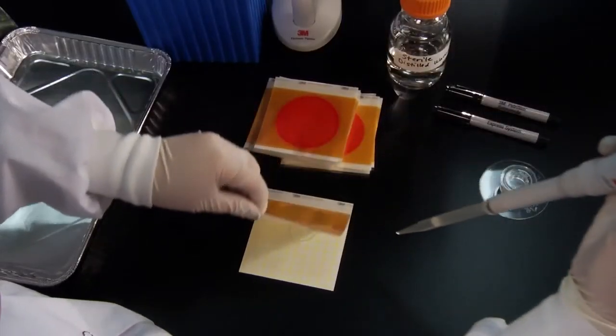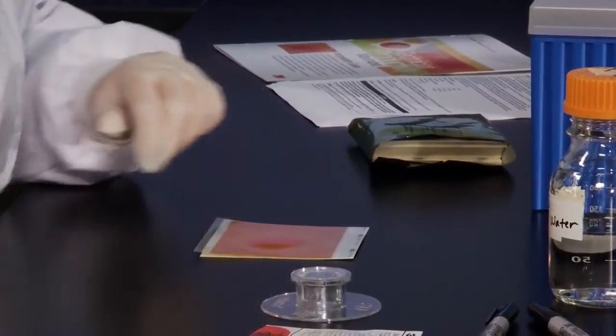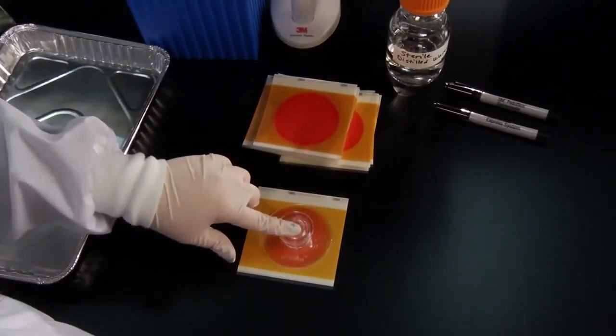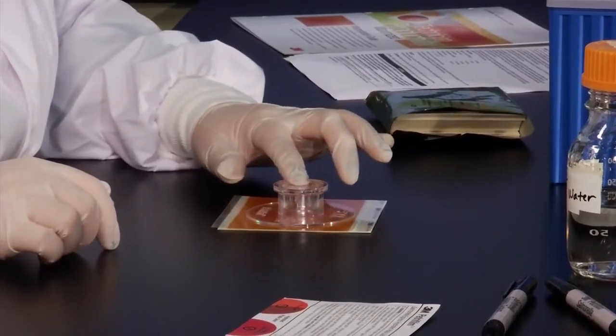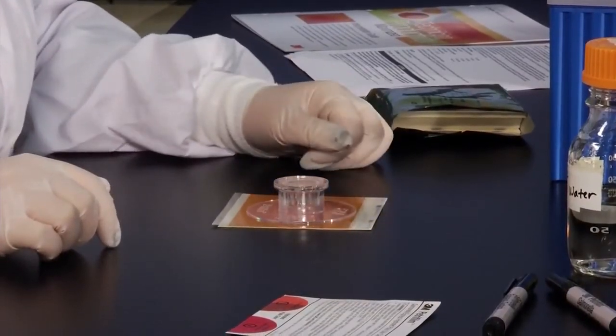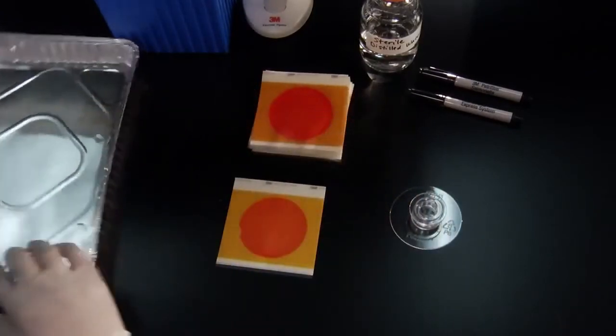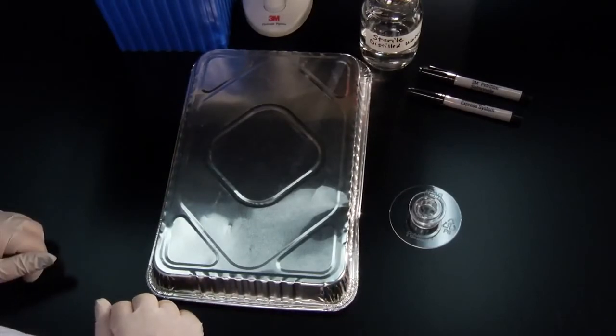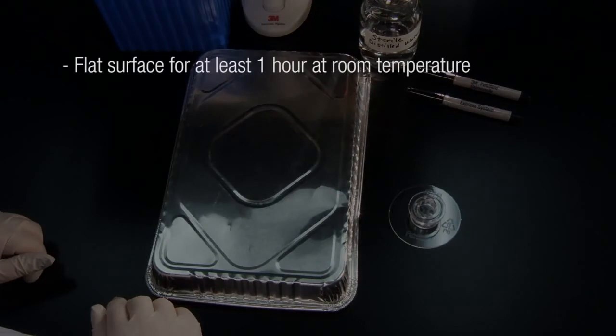Gently roll down the top film onto the diluent to prevent trapping air bubbles, and place the 3M Petrifilm Flat Spreader on the center of the plate. Press gently on the center of the spreader to distribute the diluent evenly. Remove the spreader, and leave the plate undisturbed for at least one minute.